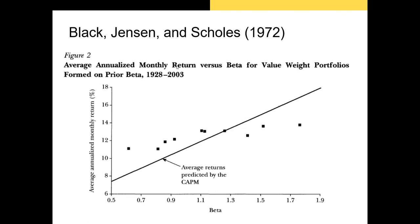There's also a paper called Betting Against Beta, developed by Frazzini and Pedersen and published in 2014. If you want to see that analysis in more detail, please just ask. I can provide links and I've listed at least one of these in our references section for this chapter.